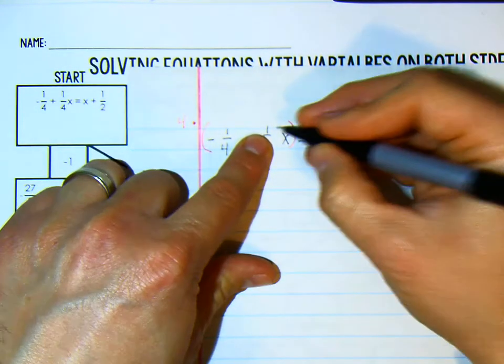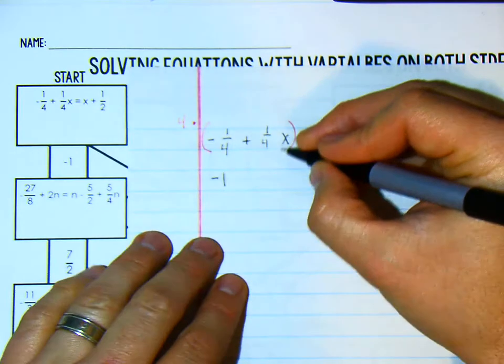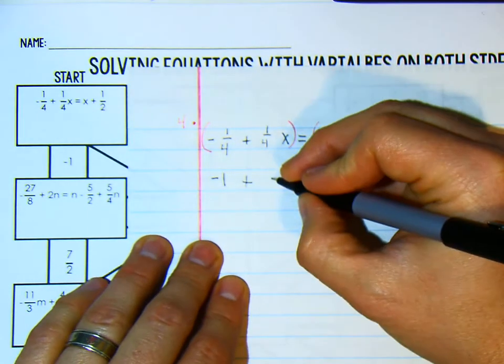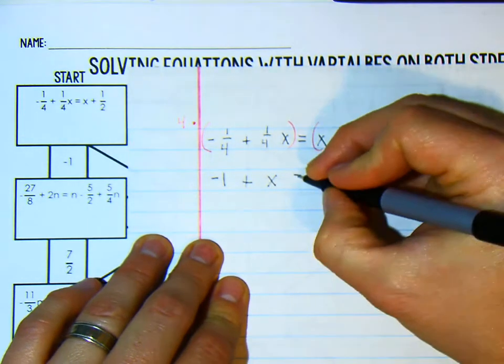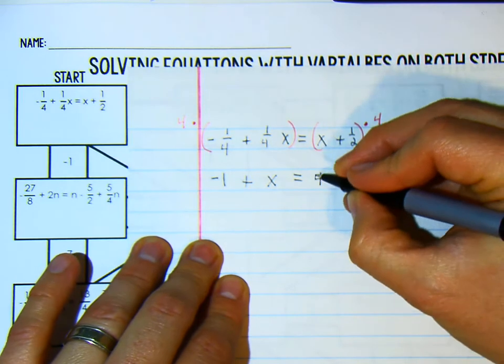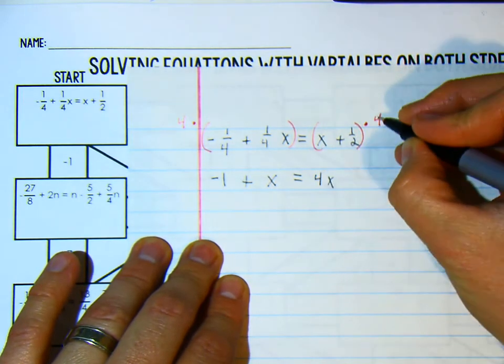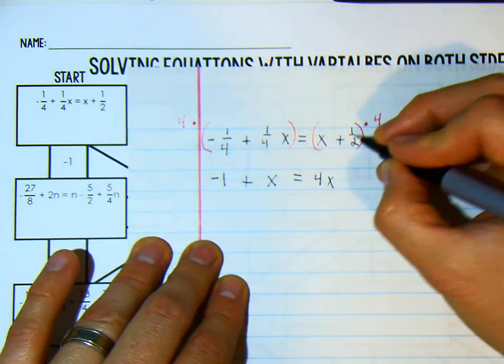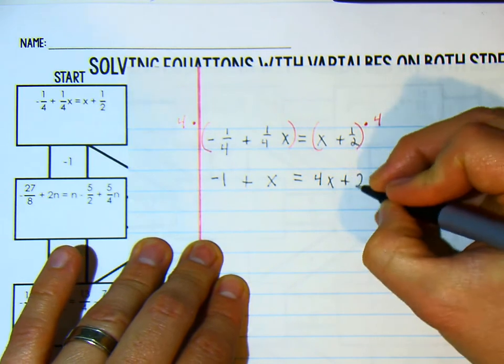And 4 times 1/4 is 1, but it is actually 1x. Now we don't really need to write the 1, we can just write x is equal to 4 times x is 4x. And half of 4 is the same thing as 4 times 1/2. Half of 4 is 2, so we will write it out of that.